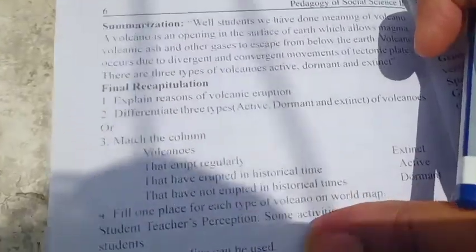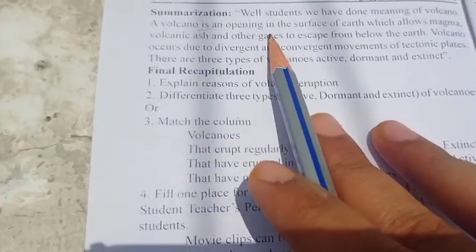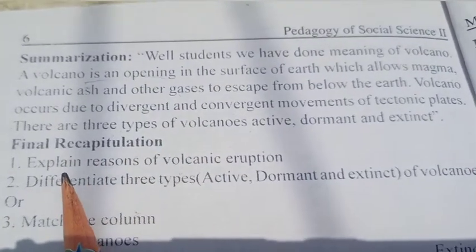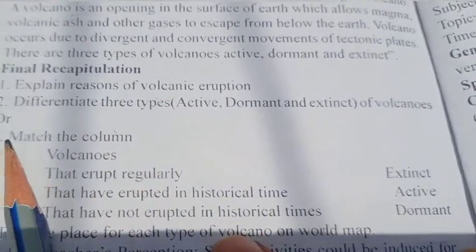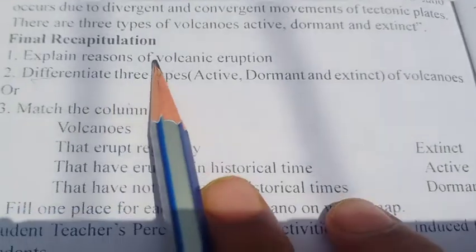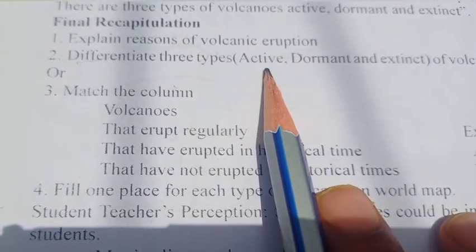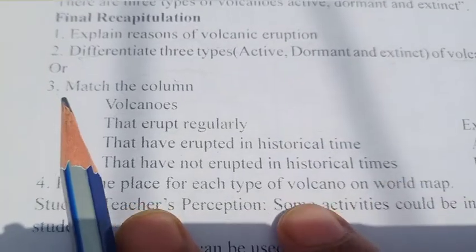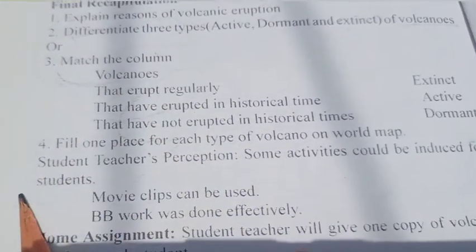This is the last page — summarization. Here is the final recapitulation: explain the reason for volcanic eruption, differentiate the three types — active, dormant, and extinct volcanoes — or match the column. These are the questions covered.